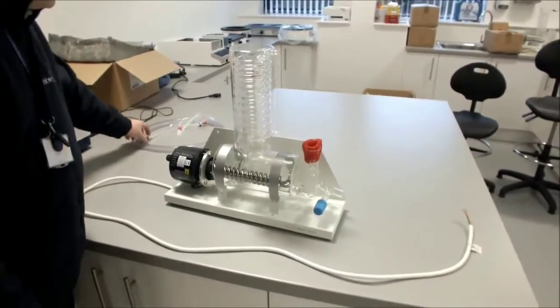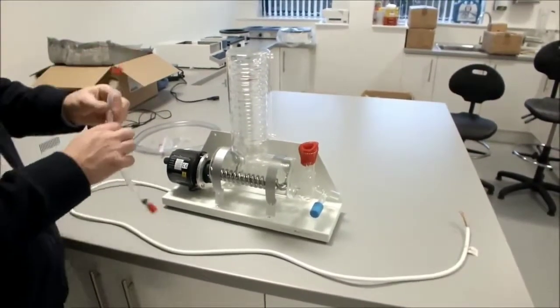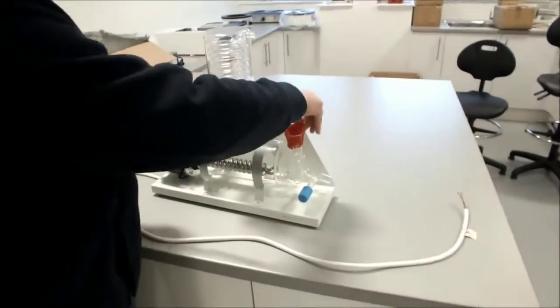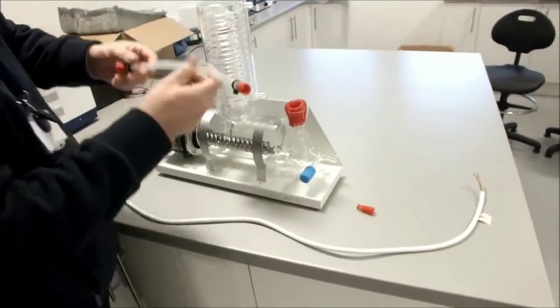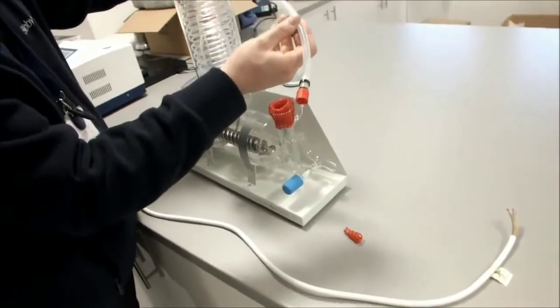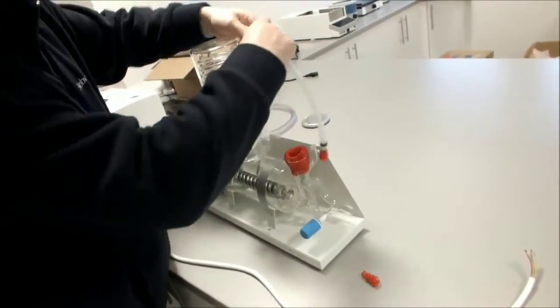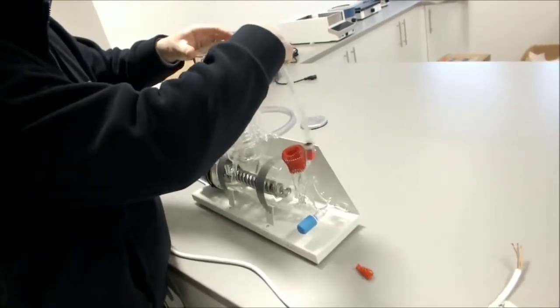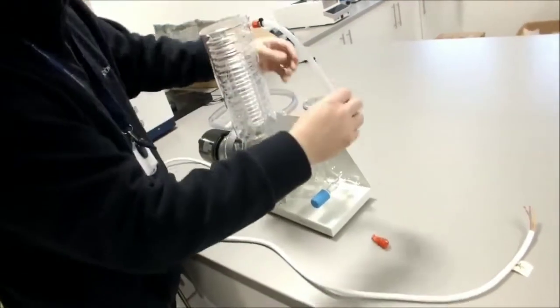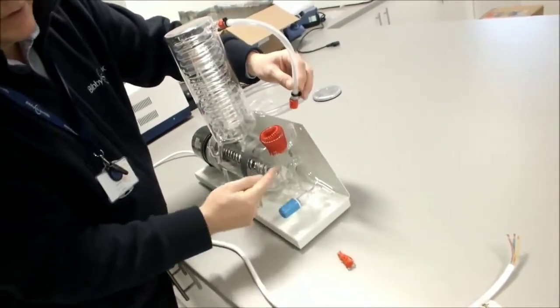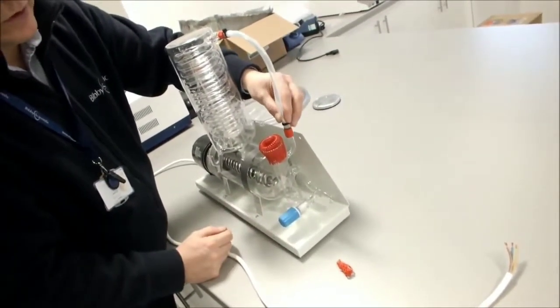When we've done that, we then take our 8mm tubing with the two connectors. We then connect this to the outlet, which is the top of the condenser. We then connect it to the connector side arm of the water constant level control.